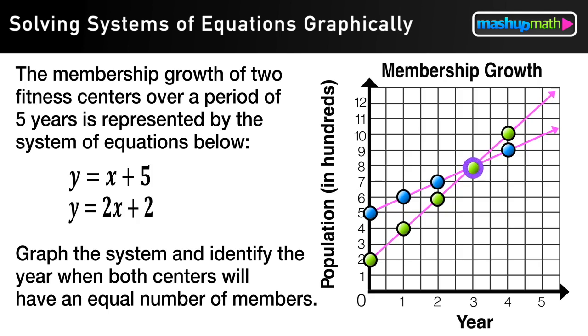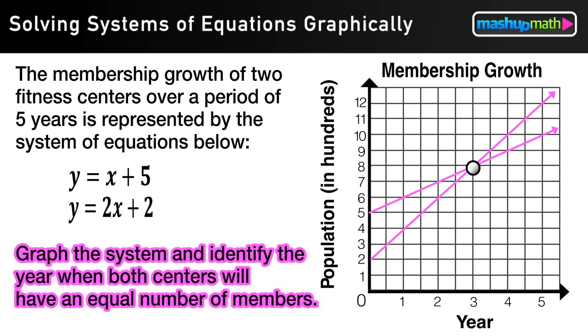Now I can see where these two equations intersect and I can find the solution to the system. So remember that we wanted to graph the system, which we just did, and find the year when both systems will have the same number of members.